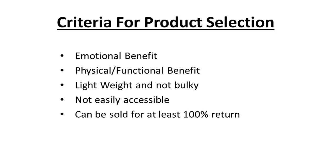Once you've identified a product that provides an emotional or physical/functional benefit, you then look at the weight of the product — you don't want to sell products that are bulky. You also want to make sure the product is not easily accessible. Check platforms like Jumia and Konga to see if others are selling it. Make sure someone cannot just walk into a shop and buy the product.